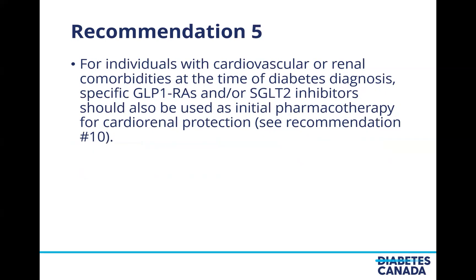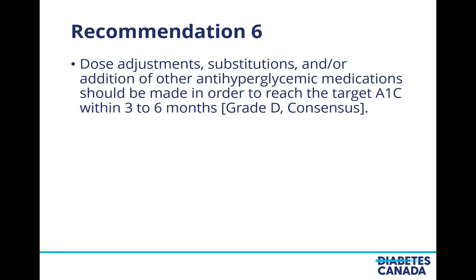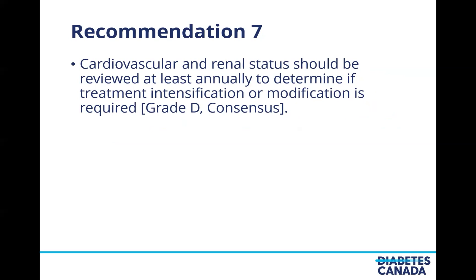For individuals with cardiovascular or renal comorbidities at the time of diabetes diagnosis, specific GLP-1 receptor agonists and/or SGLT2 inhibitors should also be used as initial pharmacotherapy for cardiorenal protection, in addition to metformin. Recommendation six states that dose adjustment, substitutions, and/or addition of other antihyperglycemic medications should be made in order to reach target A1C within three to six months. Recommendation seven states that cardiovascular or renal status should be reviewed at least annually to determine if treatment intensification or modification is required.